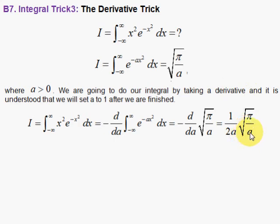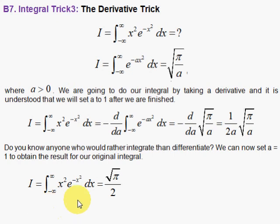Notice that at this point, you can take the a to be 1, and you should, because there's no a over here. It's understood that you would do that. And when you take the a to be 1, you have the answer to your integral. Marvelous. We take a derivative to do an integral.